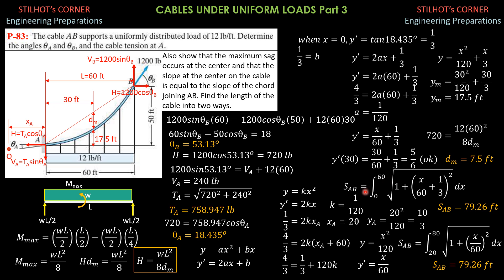The length of the cable is the integral from 0 to 60 of the square root of 1 plus Y' squared, DX. Using a calculator, the length of the cable is 79.26 feet. This is correct because the straight-line chord length — the square root of 60 squared plus 50 squared — is slightly less than 79.26, confirming the cable length.